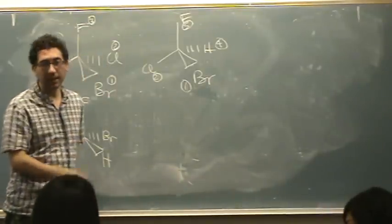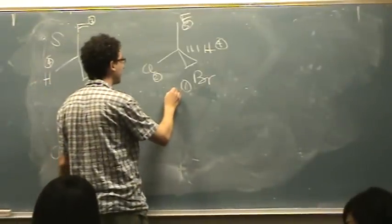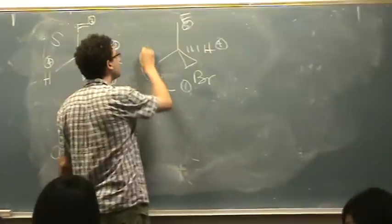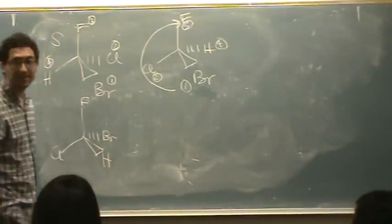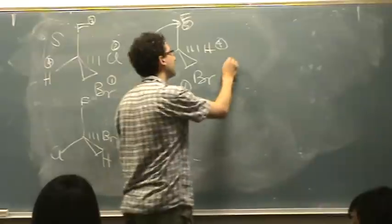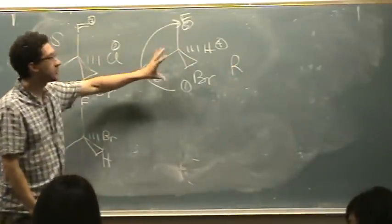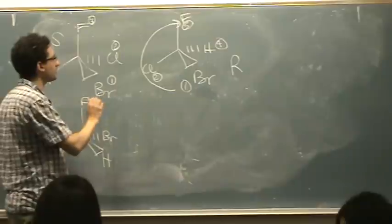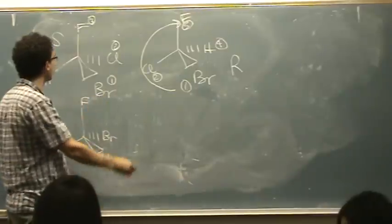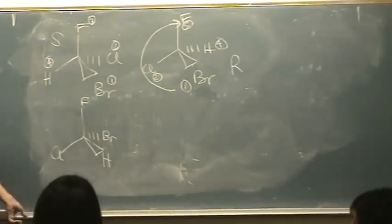There's no hand or thumb involved here. You just connect the dots: 1 to 2 to 3 — and hopefully you know how to drive. That turns to the right. Because I switched two groups, I inverted the configuration. So using the paper method, any time I switch two groups I invert the configuration, meaning the original was S.